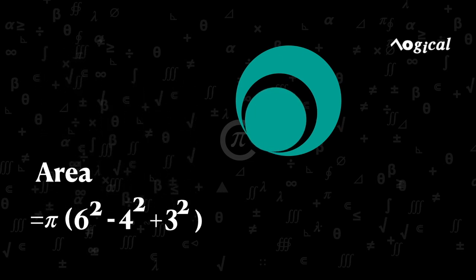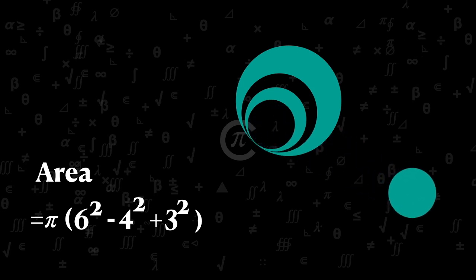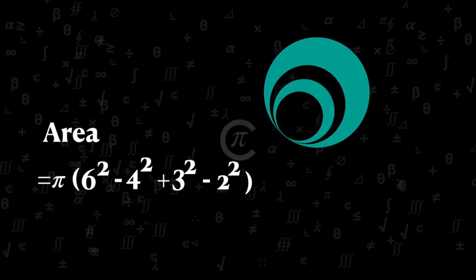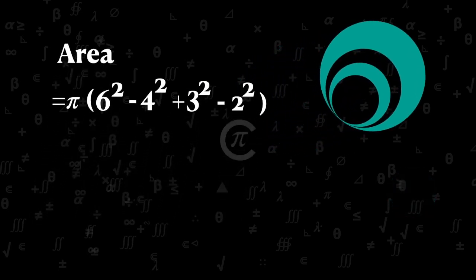One more time remove this part from the circle. Then this circle has a radius of 2 unit. Now subtract this area from the shaded area. Then area becomes pi into 6 square minus 4 square plus 3 square minus 2 square. Now calculate these squares.